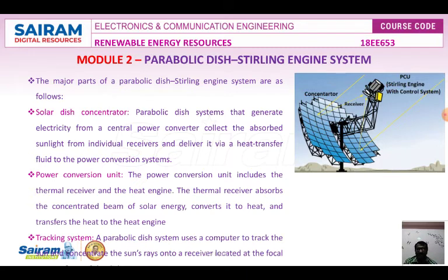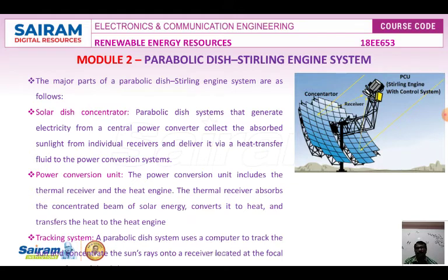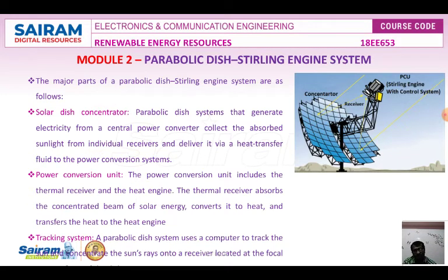A waste heat exhaust system vents excess heat to the atmosphere, and a control system matches engine operation to available solar energy. The distributed parabolic dish system has limited storage capability, but it can be hybridized to run with fossil fuel during periods when sunlight is not available — during night times, cloudy days, or rainy times.